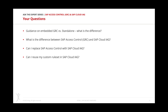You can connect IAG with Access Control through a so-called IAG bridge capability, where you save your investments in Access Control and extend it with IAG in the cloud. This gives you the same capabilities for cloud applications — like Ariba, SuccessFactors, Analytics Cloud, and Marketing Cloud — that you have for your on-premise world. If you want to control cloud products from a risk and access provisioning perspective through your Access Control installation, you require the IAG bridge with IAG in the background.